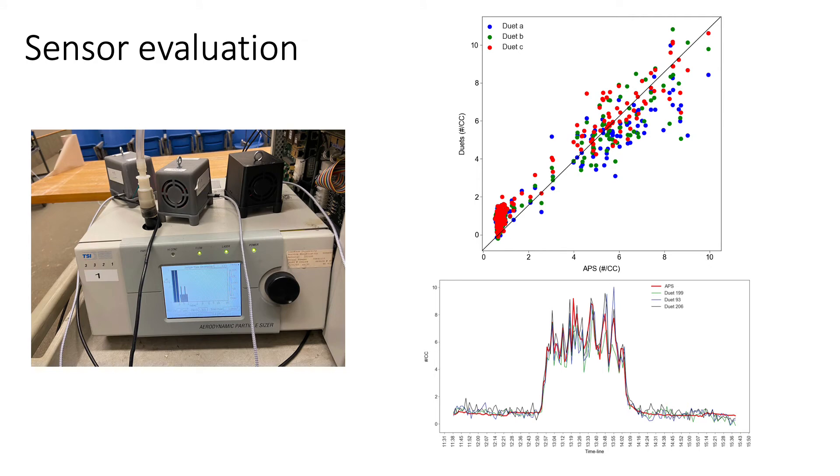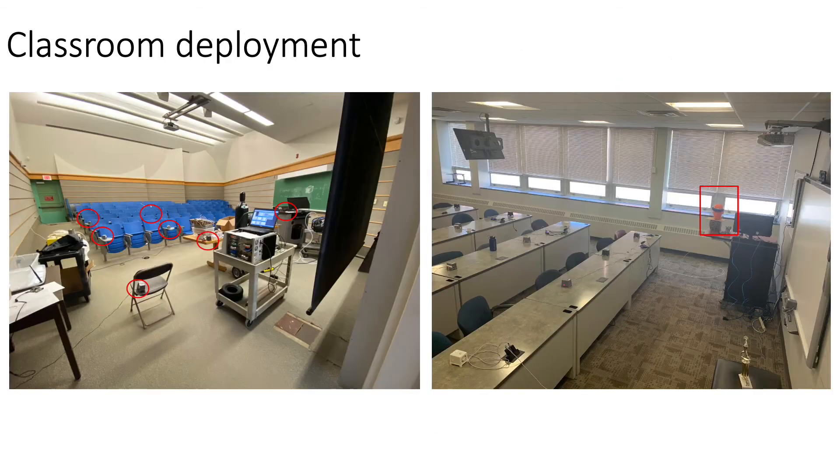We evaluated the sensors by co-locating them with a research-grade instrument, TSI's APS instrument. We compared how the concentrations change with time for these injected particles. What we found was that the APS concentrations compared to these low-cost sensors lined up pretty good. The R-squared value from this comparison was about 0.9. When we compared the low-cost sensors with each other, the R-squared value was about 0.95. So, they were very precise, and that's good for our classroom studies.